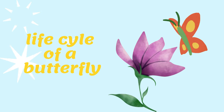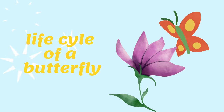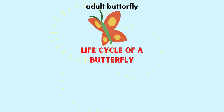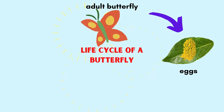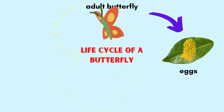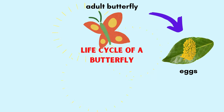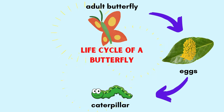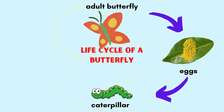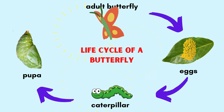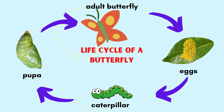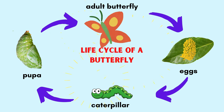Life cycle of a butterfly. An adult butterfly will lay eggs. Then the eggs will hatch into caterpillars. Then a caterpillar will form into a pupa, then become an adult butterfly again.